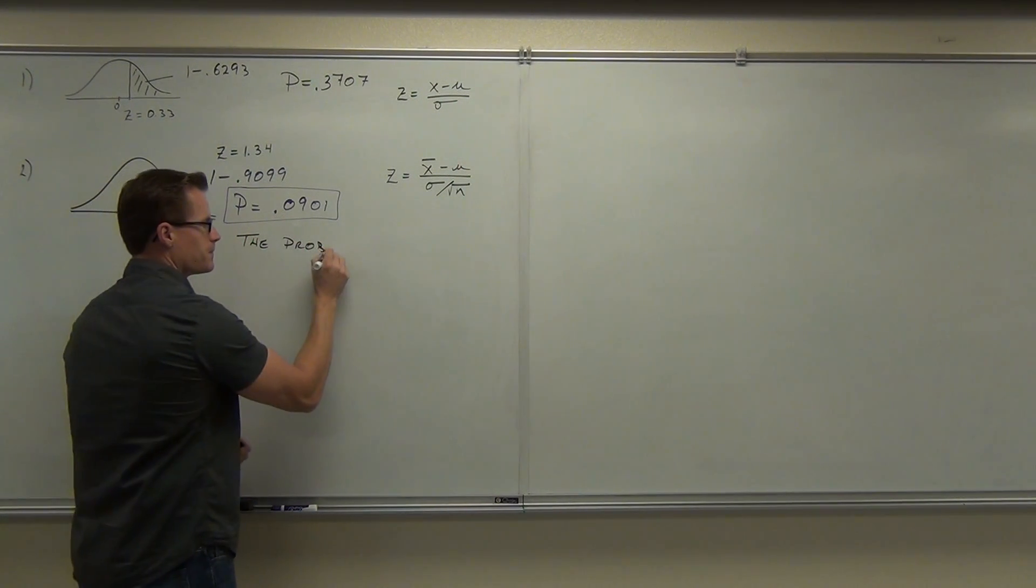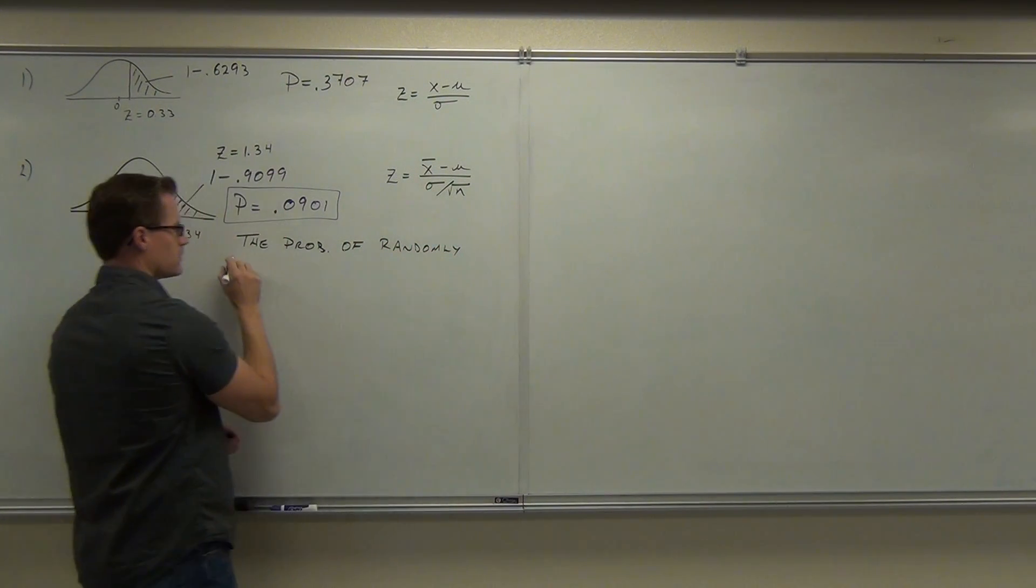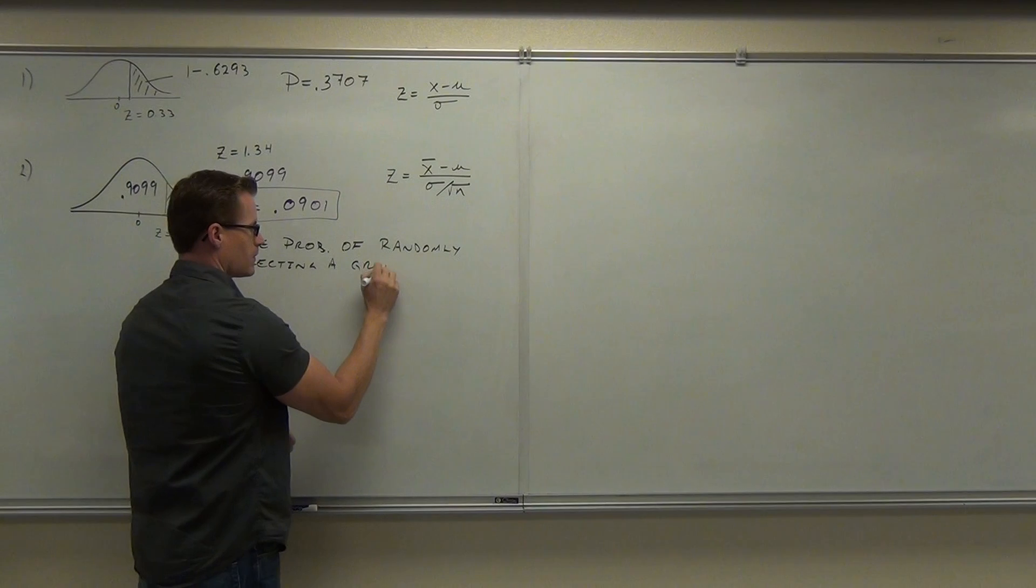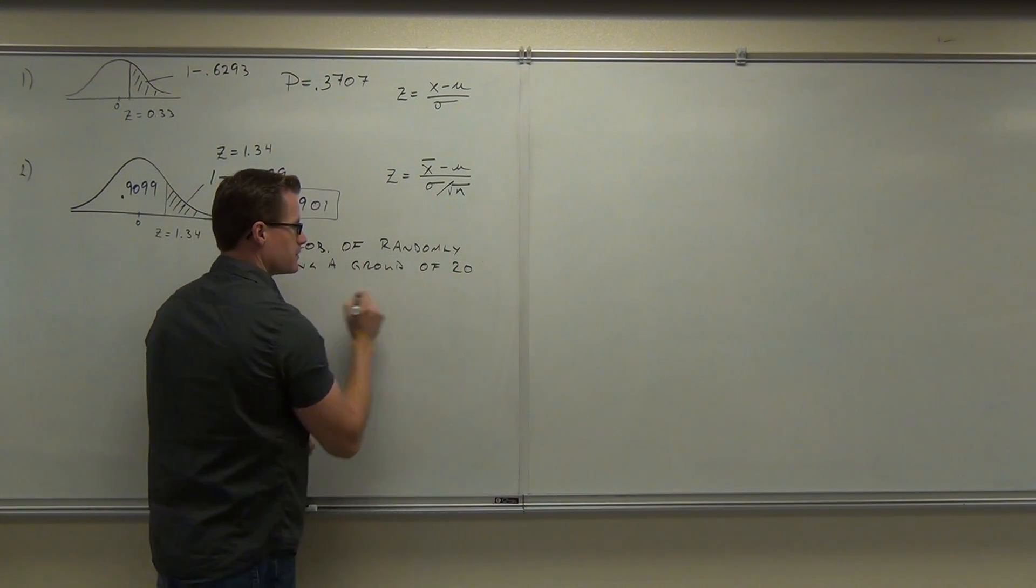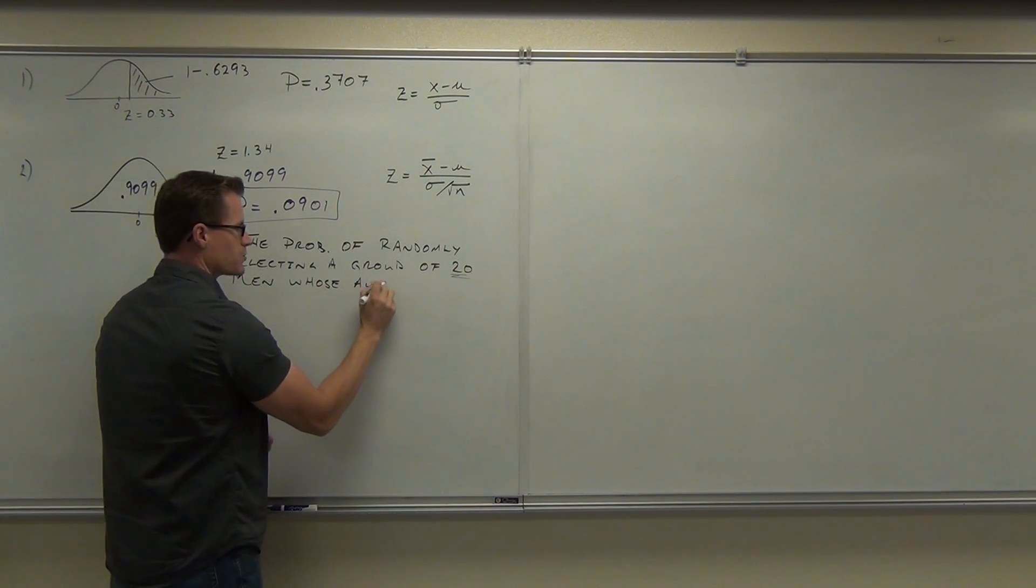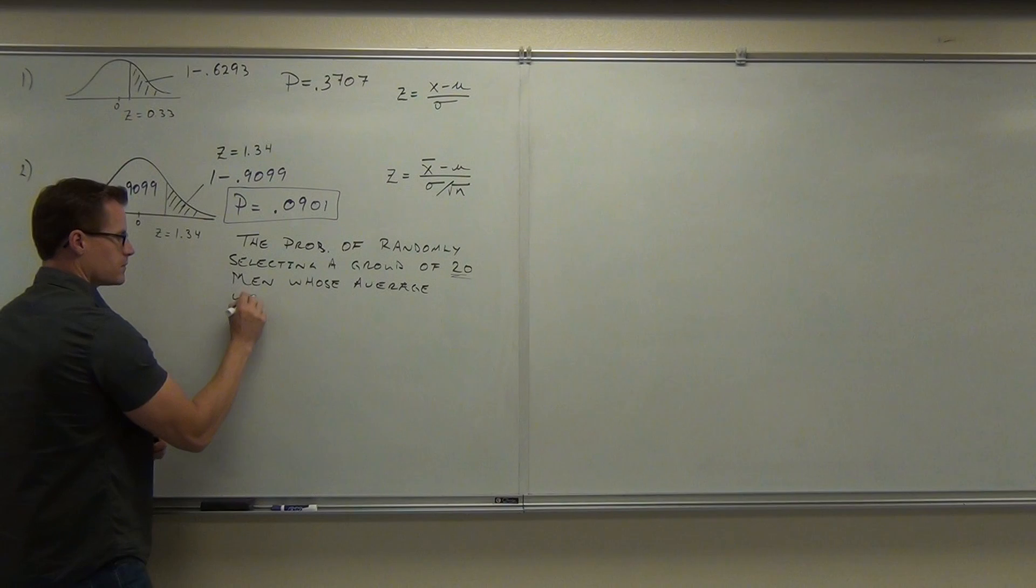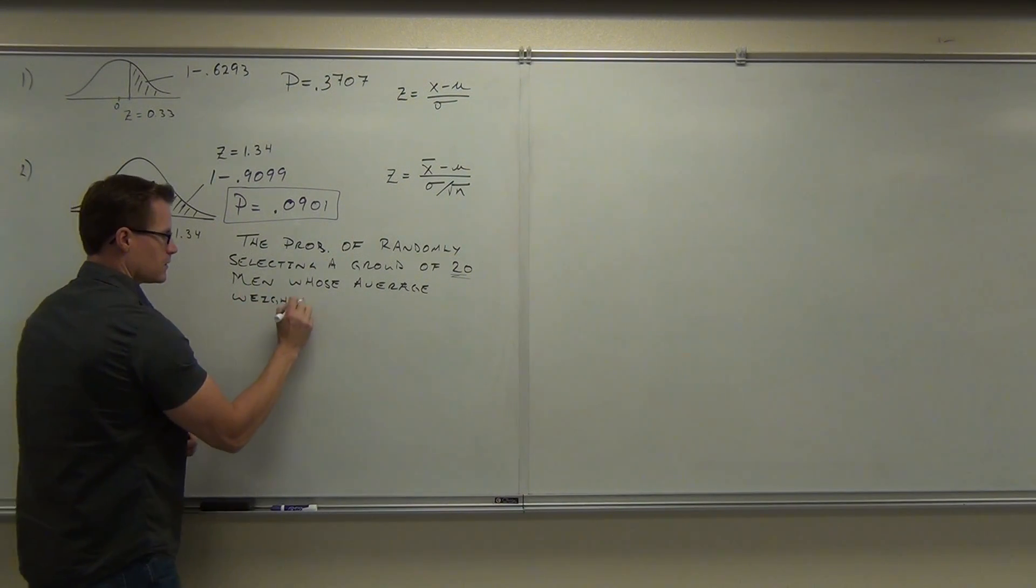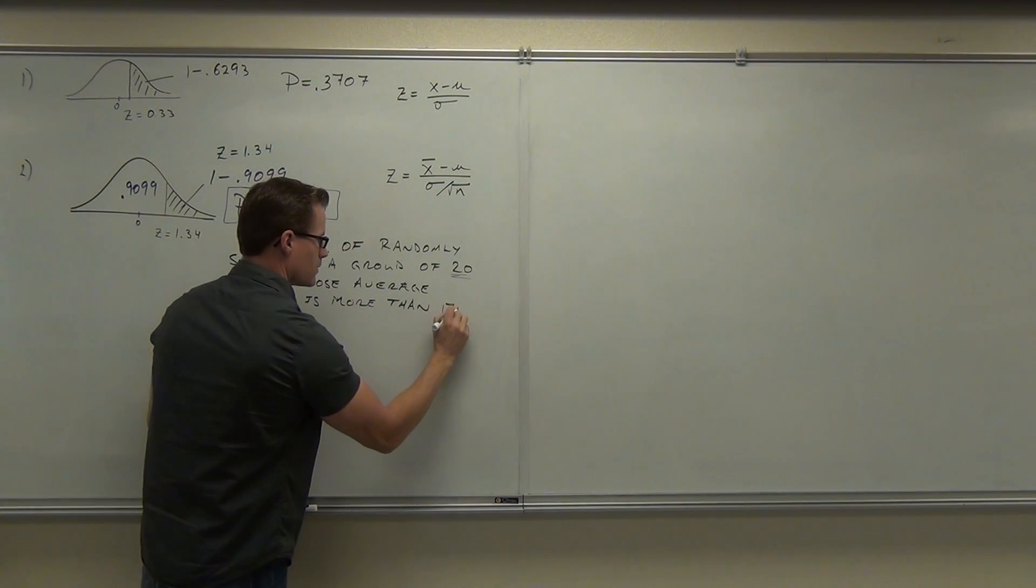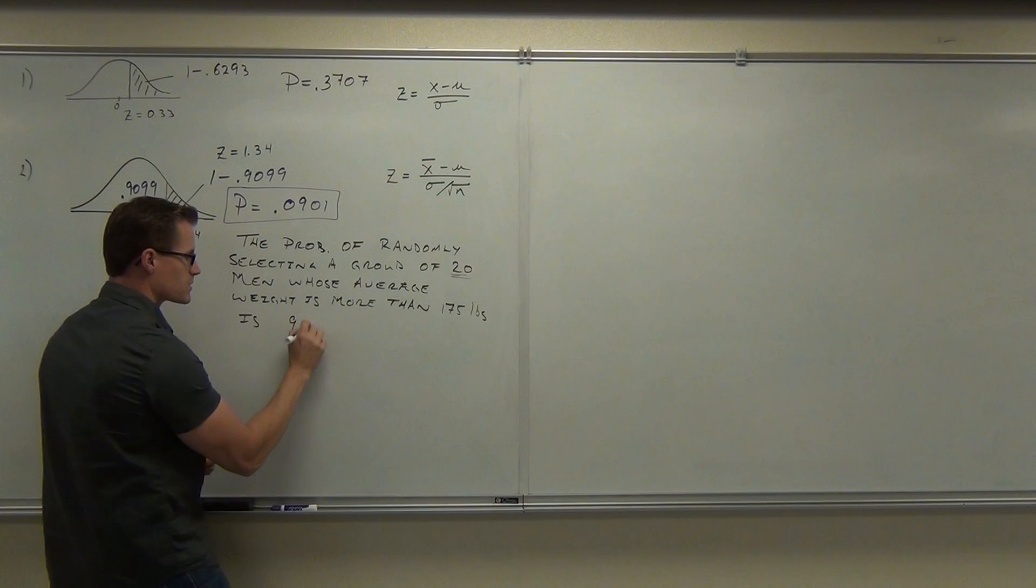The interpretation is: the probability of randomly selecting a group of 20 men whose average weight is more than 175 pounds is approximately 9.01 percent.